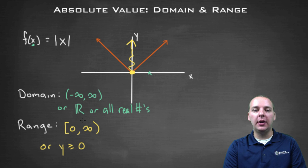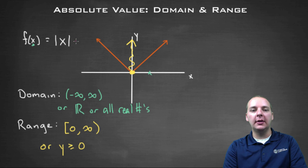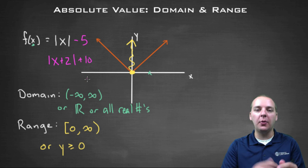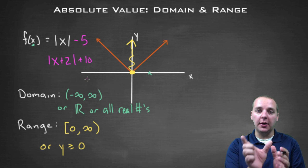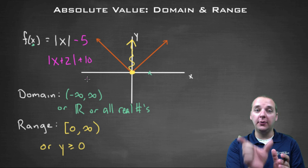This is the domain and range of just the generic absolute value graph. Now, this is probably not what you'll have on your homework and test. What you'll probably have is some version of the absolute value function, like the absolute value of x minus five, or something like the absolute value of x plus two plus ten, or something like that, where the generic parent function, the absolute value V-shape graph,